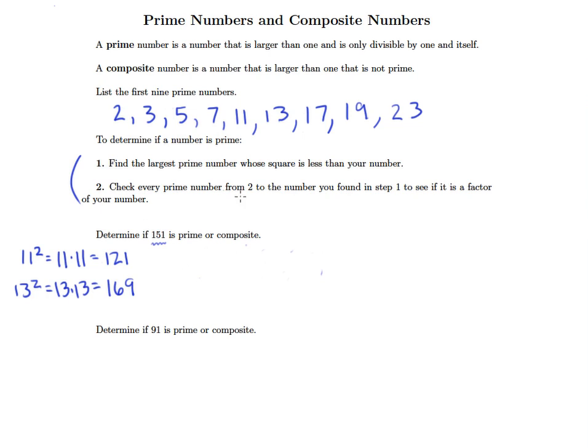Step number two says we're going to check every prime from two up to the number we found in step one. So our number from step one is 11, so from two up to 11. We're trying to figure out if any prime numbers between two and 11 divide into 151 evenly. The conclusion here is that if none of them do, then 151 is definitely prime. And if one of them does, of course, it's not because it has a factor besides one and itself.